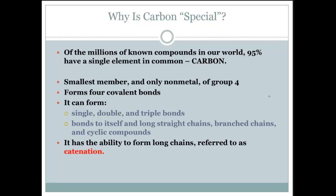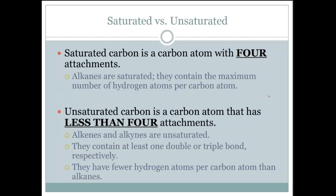It has the ability to form long chains, referred to as catenation. Saturated carbon is a carbon with four attachments - in other words, four things coming off of it. Alkanes are saturated. They contain a maximum number of hydrogen atoms per carbon.